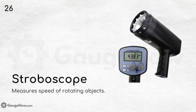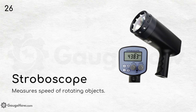Stroboscope measures the speed of rotating objects. For example, it can be used for high-speed robotic arms to calculate their rotational speed.